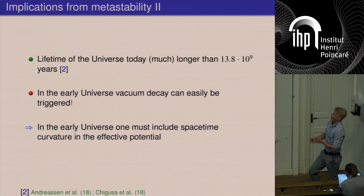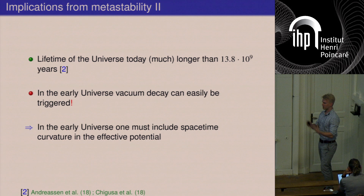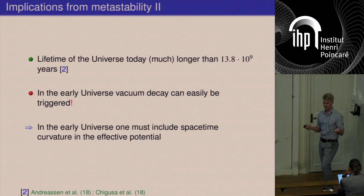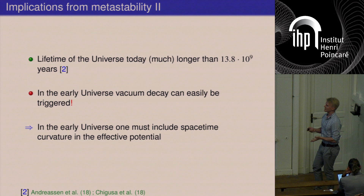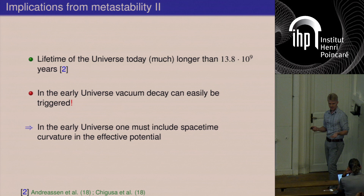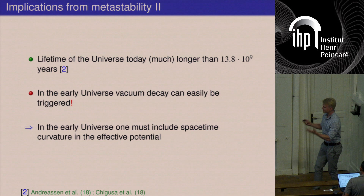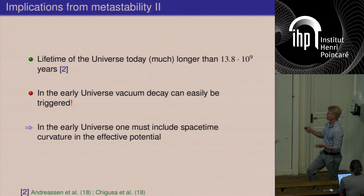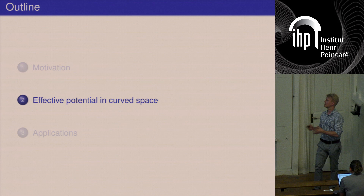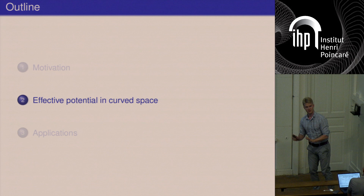Everything shown so far is based on a standard field-theoretic loop calculation in flat space. But in the early universe you cannot assume flatness — the universe is strongly curved, especially during inflation and reheating. To truly investigate how the standard model behaves in the early universe, you must calculate the effective potential on a curved background. This was the motivation for our project, which turned out to be quite difficult but ultimately doable. I will now go through the calculation in some detail.